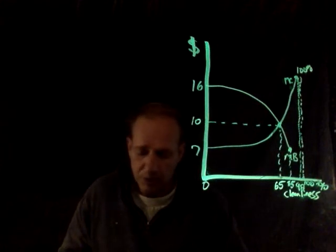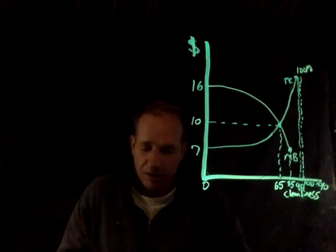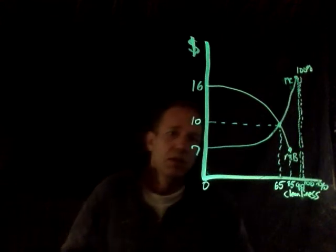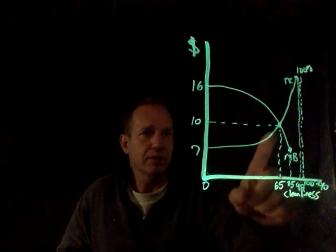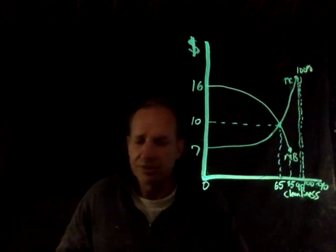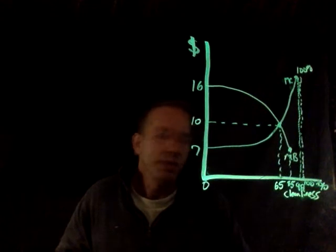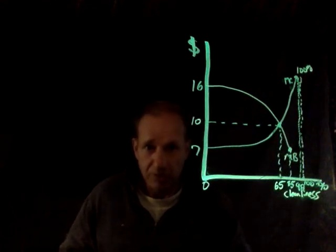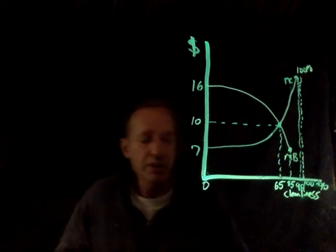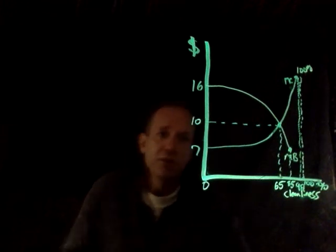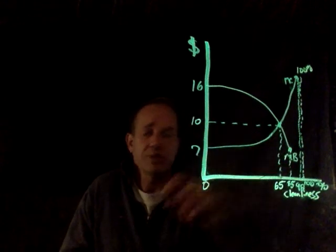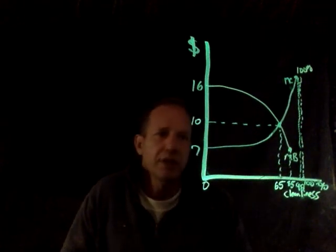Letter B: when the optimal percentage degree of water cleanliness has been attained, what cost will be incurred for the last unit of water cleanup? It's also the value of the last unit of benefit of water cleanup. And that would be $10, because that is where marginal cost equals marginal benefit, and that's where they stop — because they're equal at $10.